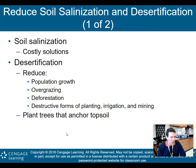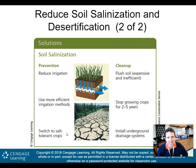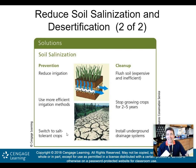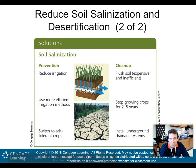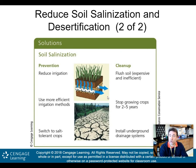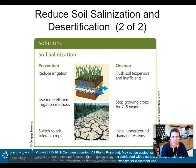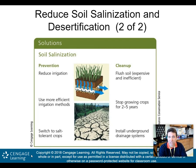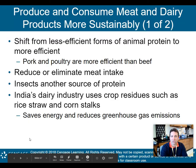For soil salinization prevention, reduce your irrigation, use more efficient irrigation methods, or switch to salt-tolerant crops — perhaps genetically bred to handle more salt. Cleanup is unfortunately very expensive. You have to flush the soil, which is costly and inefficient. You could also stop growing crops for two to five years, but that may not be financially possible. Installing underground drainage systems can help move away excess irrigation water before salt builds up.